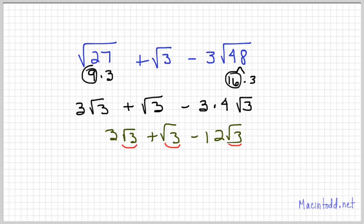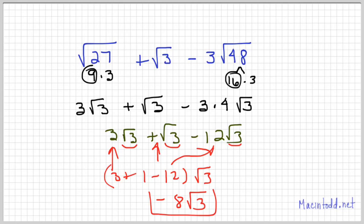I can add their coefficients: 3 plus 1 minus 12 is 4 minus 12, or negative 8√3. So we add radicals just by adding their coefficients if they are like radicals.